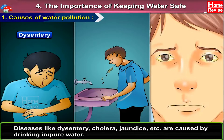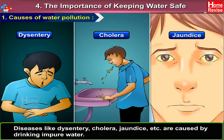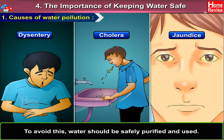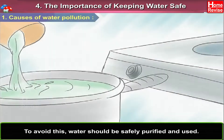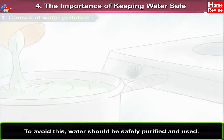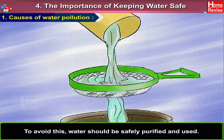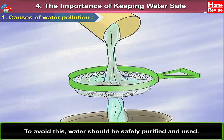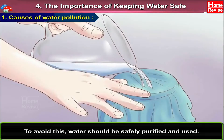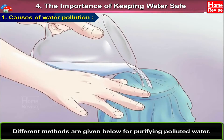Diseases like dysentery, cholera, jaundice, etc. are caused by drinking impure water. To avoid this, water should be safely purified and used. Different methods are given below for purifying polluted water.